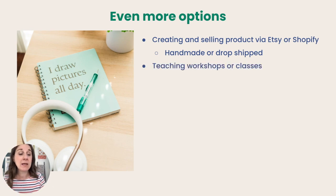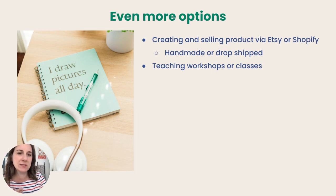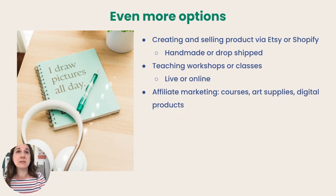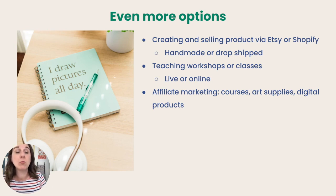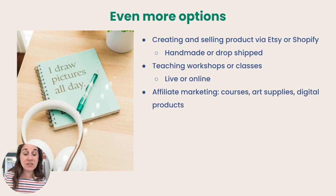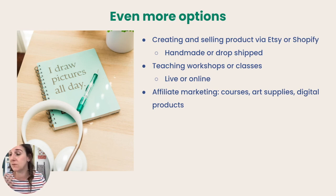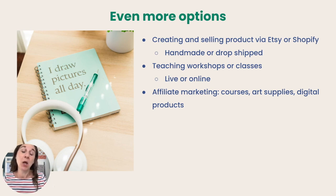You could teach workshops or classes. If you're a watercolor artist, a printmaker, or really talented at Adobe Illustrator or Photoshop, you can teach those skill sets live in person or online. You could also do affiliate marketing — talented artists with big followings get approached by art supply companies or Procreate brush companies to talk about supplies they use, getting a cut when followers buy those products. Similarly, if you're an affiliate for a course you love, you get a portion of the sales price when someone purchases through your link.